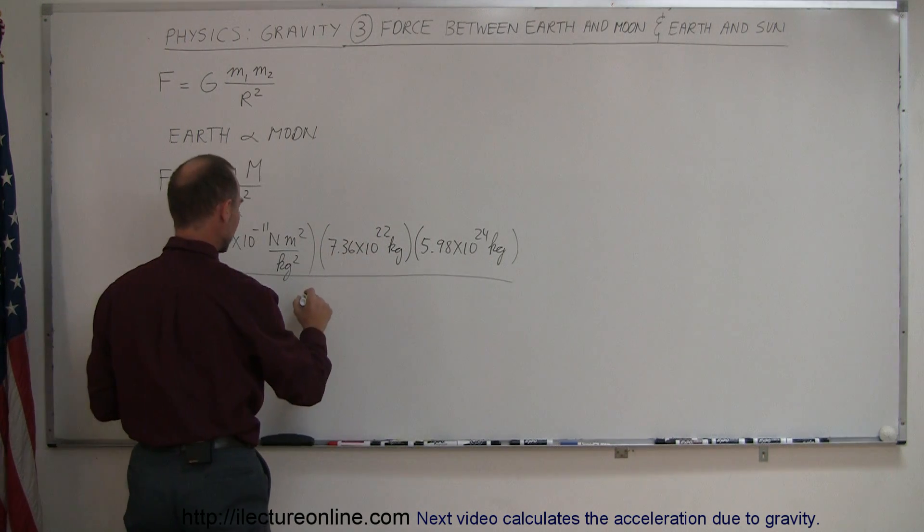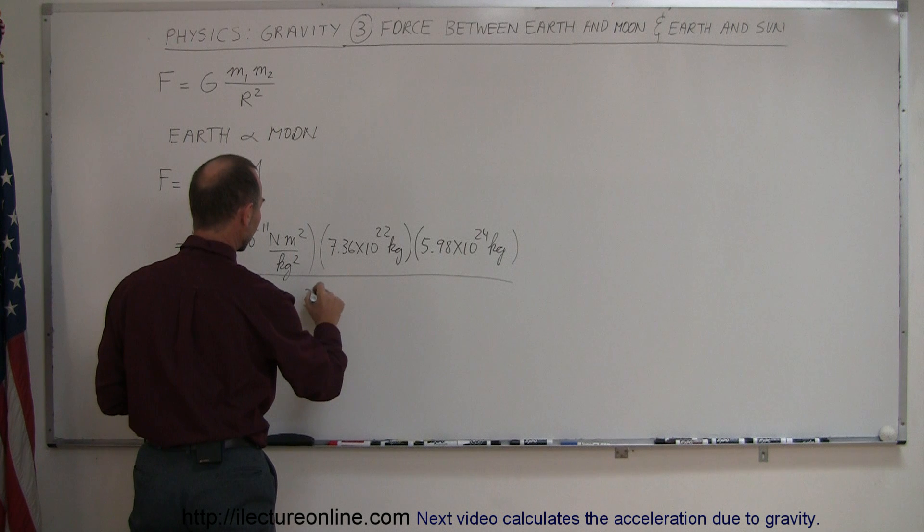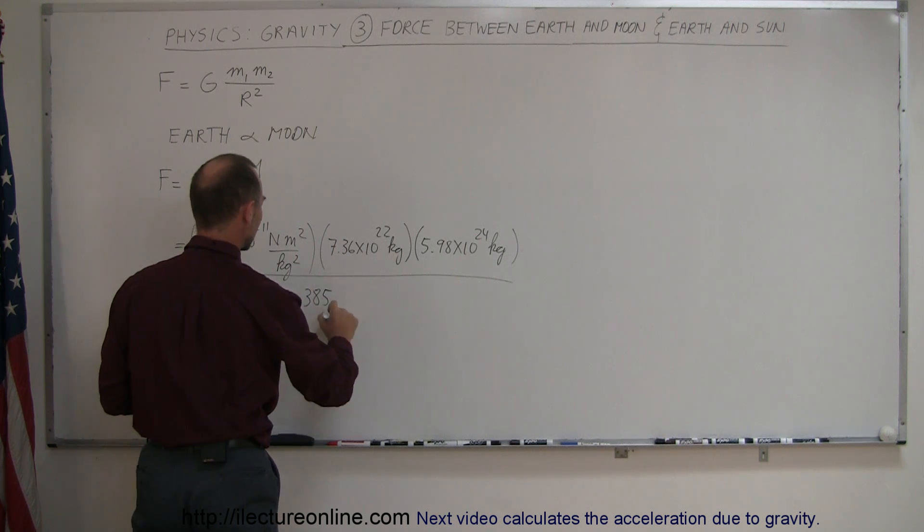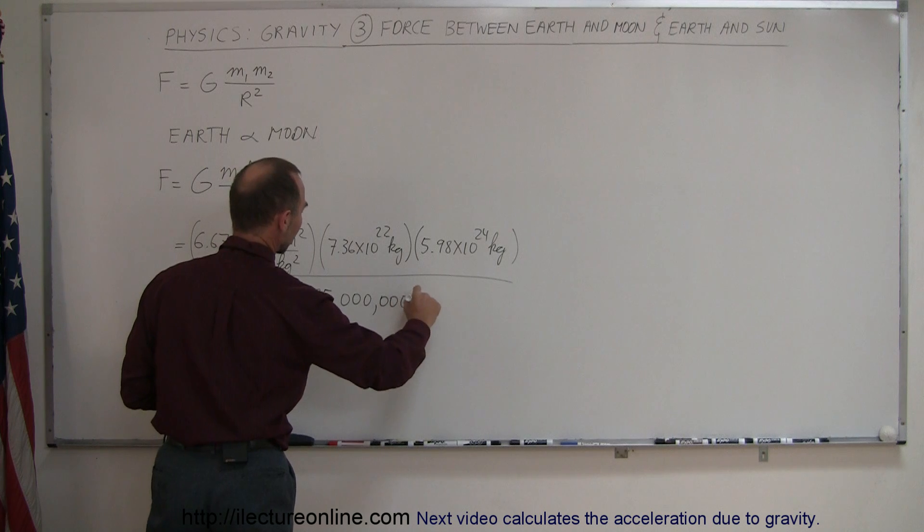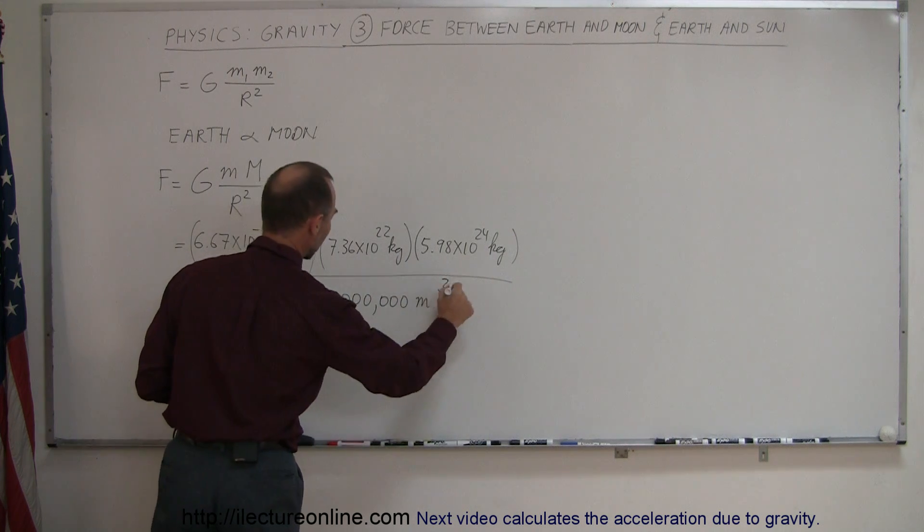Divide that by the distance between them. The average distance is about 385,000 kilometers, so it would be 385 million meters, and we have to square that.